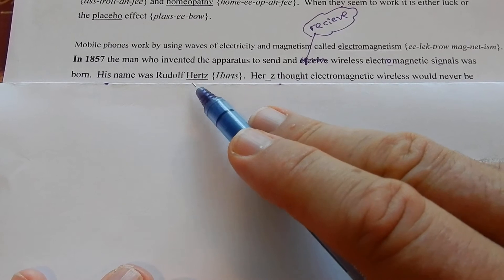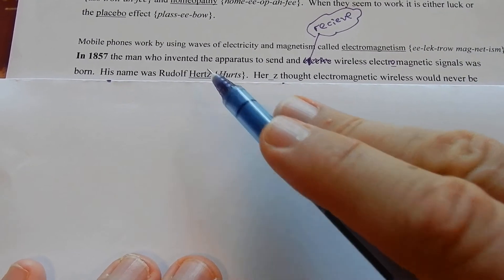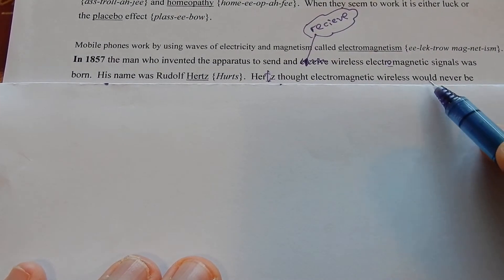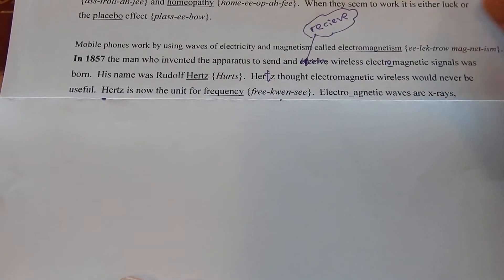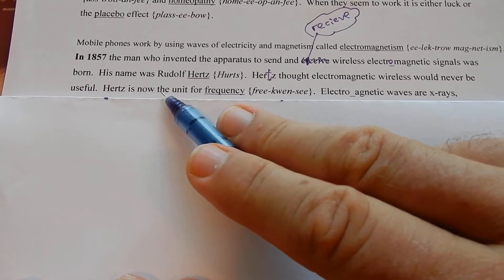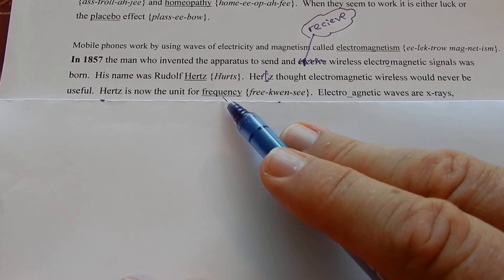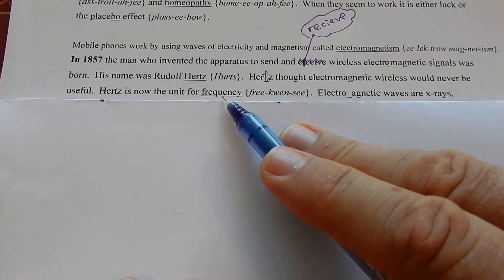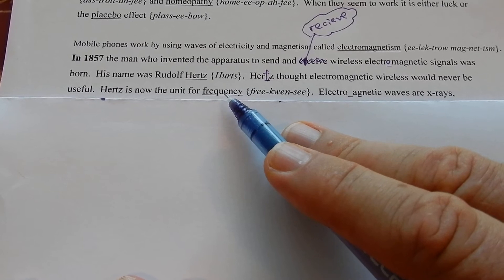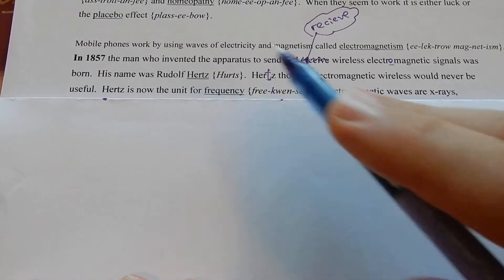Every machine you've got says his name on the back - Hz, which is short for Hertz. Hertz thought electromagnetic wireless would never be useful; it's the Wi-Fi you use in your home. Hertz is now the unit for frequency. 60 Hertz is what all electricity works on in your home. Everything you plug into the wall needs 60 Hertz, and all over the world everyone uses 60 Hertz, after Mr. Rudolf Hertz.